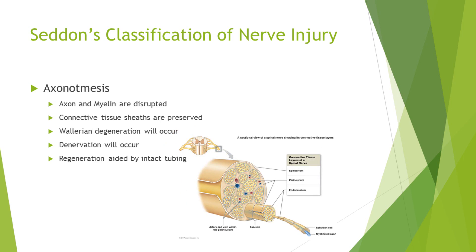Axonotmesis is where the axon and myelin are disrupted, but the connective tissue sheaths are preserved. What's going to happen here is Wallerian degeneration because there's been axonal loss, with subsequent denervation which will be picked up on EMG. However, because the connective tissue sheaths are preserved, the scaffolding is in place for good regeneration, because there's intact tubing and scaffolding for the nerves to regrow along back to their original targets.